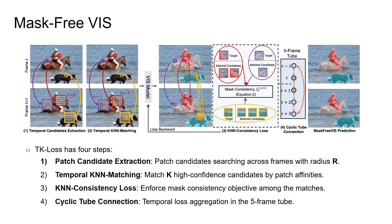In contrast to optical flow, we do not restrict our formulation to one-to-one correspondences. Instead, we establish one-to-K correspondences. This includes the conventional one-to-one case where a unique well-defined match exists. However, it also allows us to handle non-existent correspondences (K equals zero) in case of occlusions, and one-to-many (K greater than or equal to two) in case of homogeneous regions. Our approach is simple to implement, with negligible computational overhead and no learnable parameters, yet outperforms baselines employing state-of-the-art optical flow to enforce temporal mask consistency.